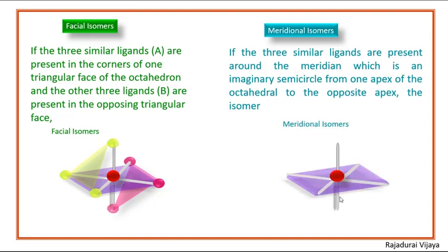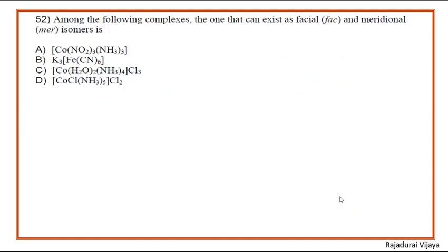In this octahedral complex, the similar A-type ligands are arranged in a semicircular way starting from one apex of the octahedron to the opposite apex. Similarly, the other remaining similar ligands are arranged in a semicircular way starting from another apex to the opposite apex of the octahedron. This type of isomer is known as a meridional isomer.